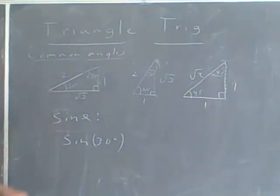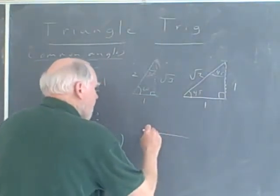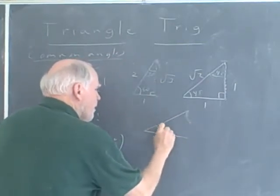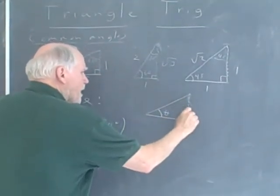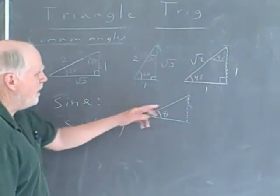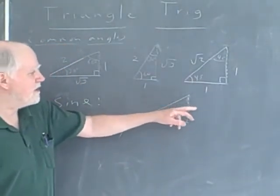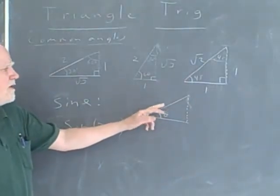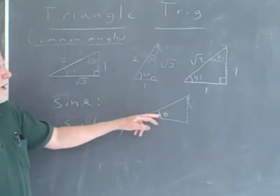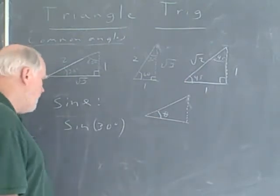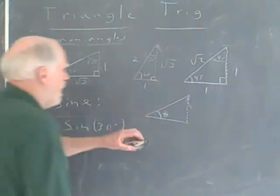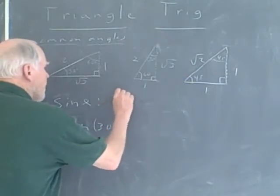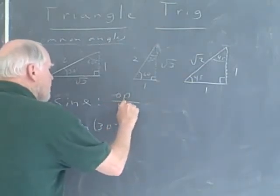If we take an angle and we want to know the sine of an angle, what we can do is drop an altitude. And if we know the length of this side and the length of this side, the sine is the opposite side over the hypotenuse. That ratio will give me the sine of theta — it is the opposite side over the hypotenuse.